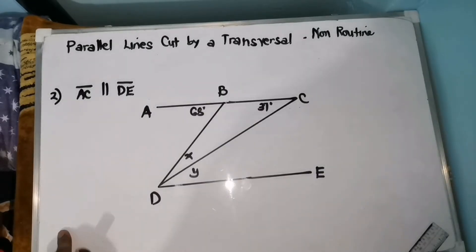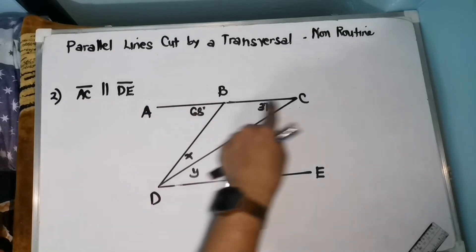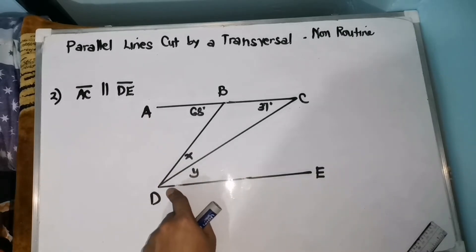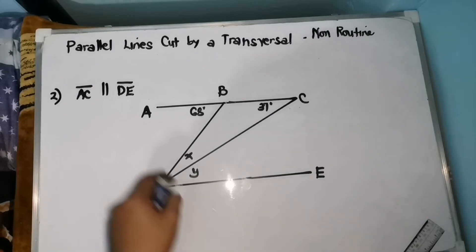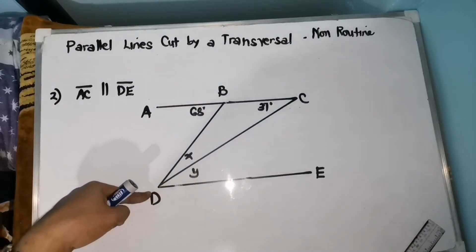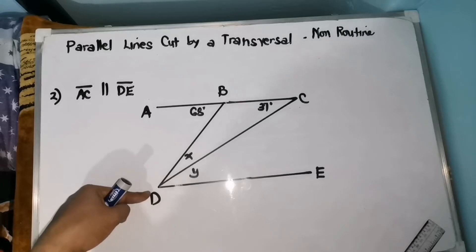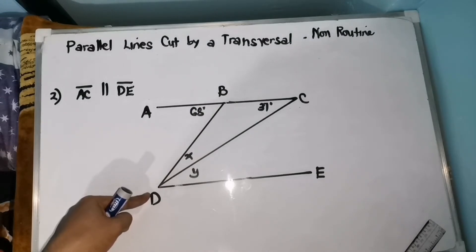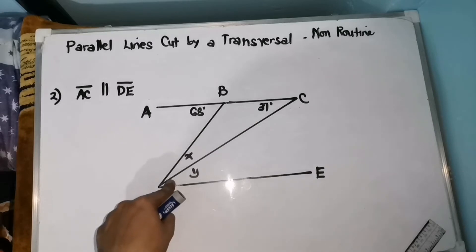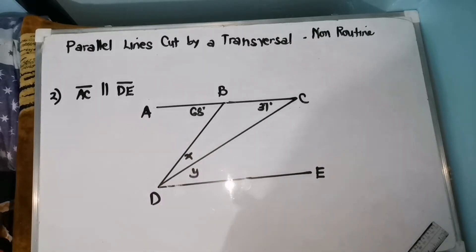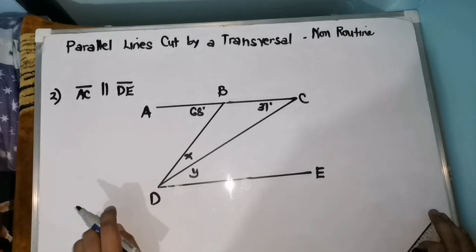For number 2, our given is segment AC. Segment AC is parallel with segment DE. We have here a transversal line — pwede itong BD, at pwede rin naman itong CD. Itong line na ito pwede nating i-extend and these lines pass through our given perpendicular line, so pwede nating siyang tawagin perpendicular transversal line. Itong BD ay transversal line ng parallel lines natin na AC and DE, same with line CD. We are asked to find the value of X and Y.